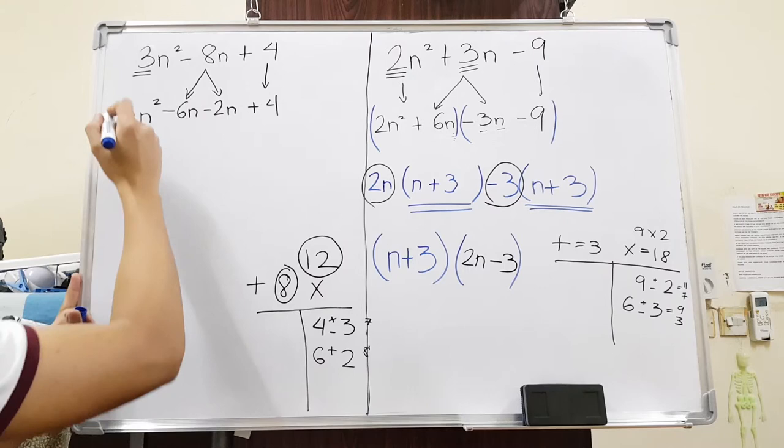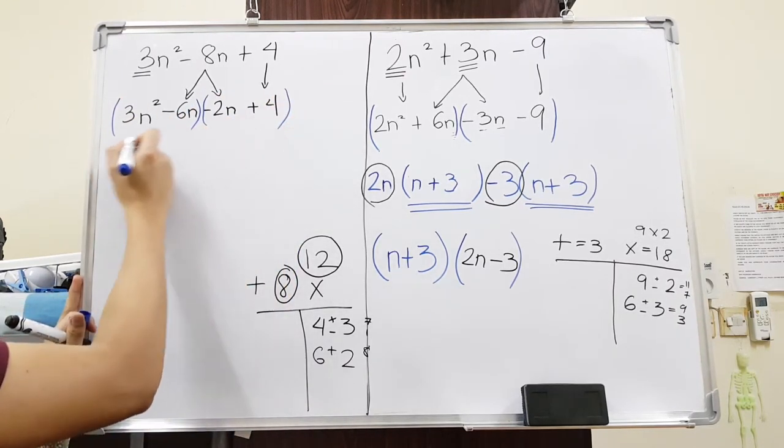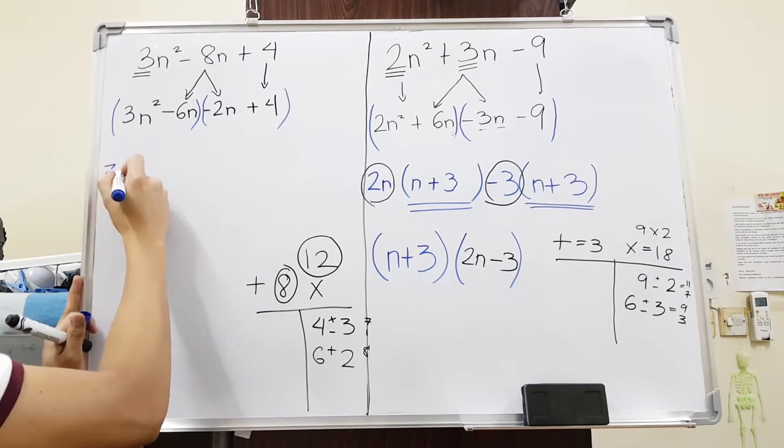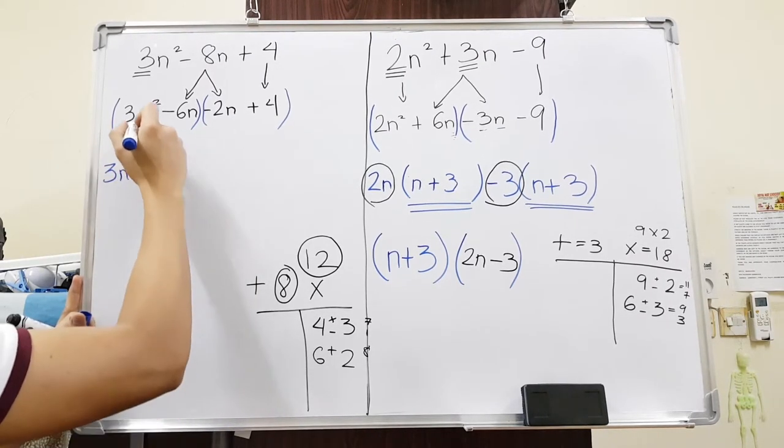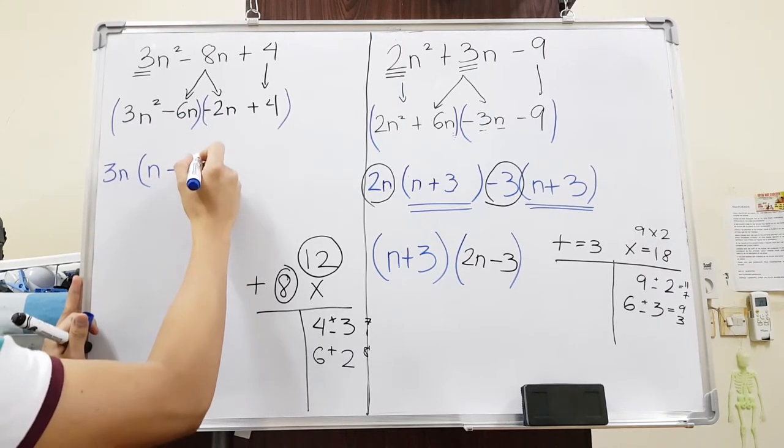Next, we are going to group the first two and the second two numbers. For the first two, the common factor here is 3n. Therefore, if I divide this by 3n, it's just n. If I divide this by 3n, it's just minus 2 or negative 2.